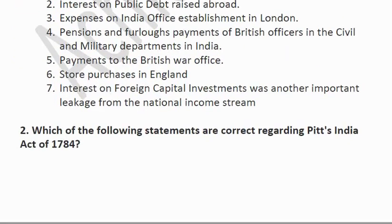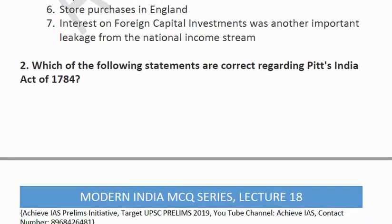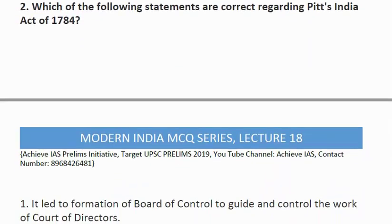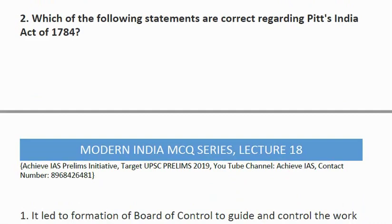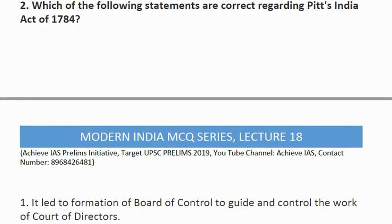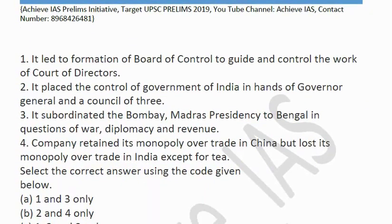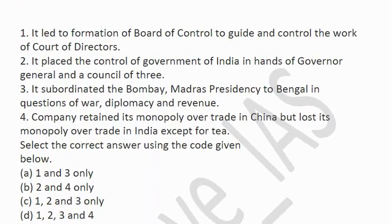The second question is: which of the following statements are correct regarding Pitt's India Act of 1784? Statement 1: it led to the formation of a Board of Control to guide and control the work of the Court of Directors. Statement 2: it placed control of the government of India in the hands of the Governor General and a Council of Three. Statement 3: it subordinated the Bombay and Madras Presidencies to Bengal in questions of war, diplomacy, and revenue. Statement 4: the Company retained its monopoly over trade in China but lost its monopoly over trade in India.